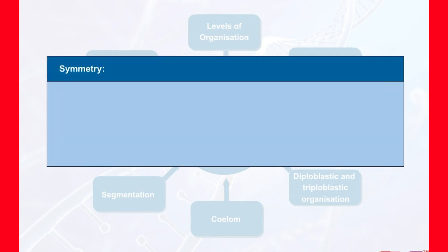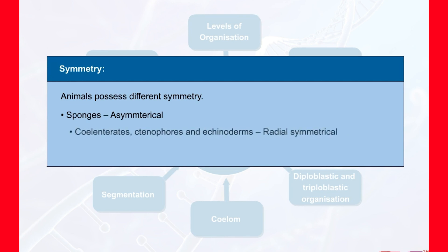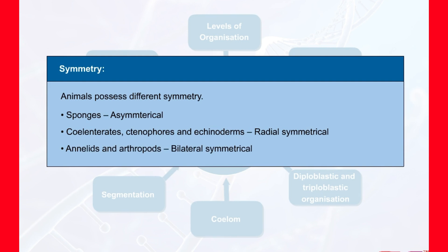Symmetry: various animals possess different types of symmetry. Sponges are mostly asymmetrical — any plane passing through the center does not divide them into equal halves. Coelenterates, ctenophores, and echinoderms exhibit radial symmetry, meaning any plane passing through the center divides the body into identical halves. Some animals like annelids and arthropods possess bilateral symmetry — the body can be divided into identical right and left halves in only one plane.